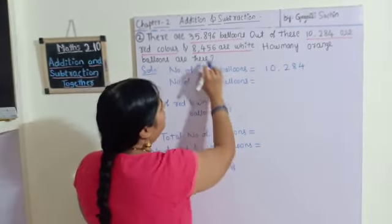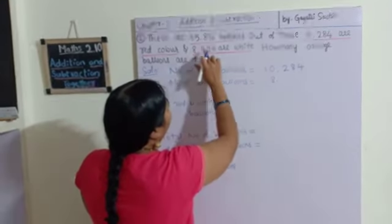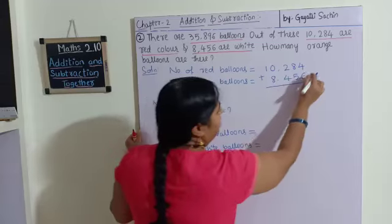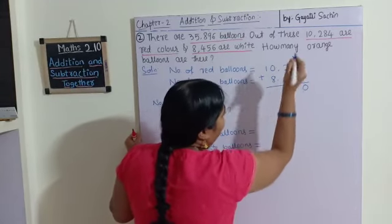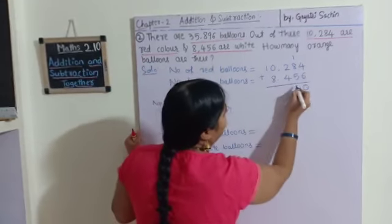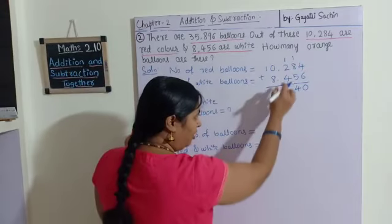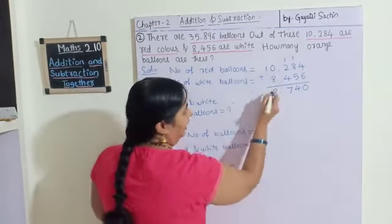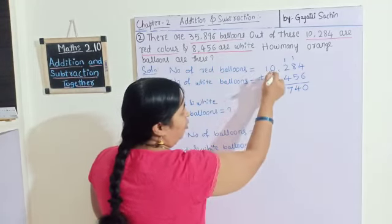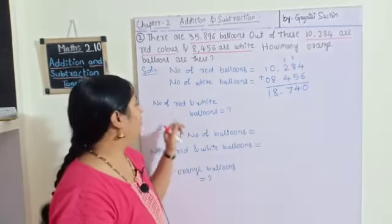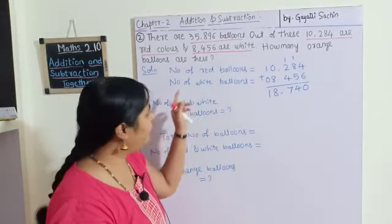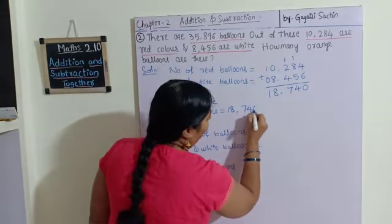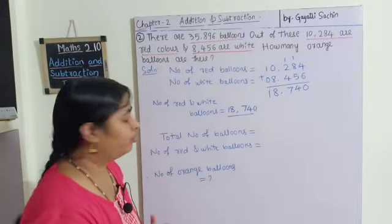Let's add 10284 and 8456. 6 plus 4 is 10, write 0 and carry 1; 8 plus 5 is 13 plus 1 is 14, write 4 and carry 1; 4 plus 2 is 6 plus 1 is 7; 8 plus 0 is 8; 1 plus 0 is 1. So the total number of red and white balloons is 18740.